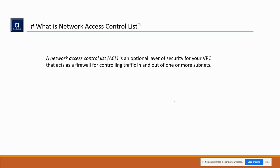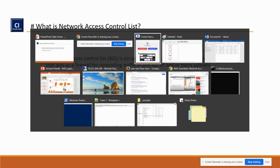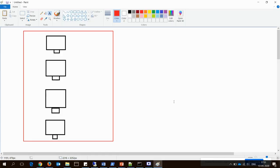NACL is one optional layer of security for your VPC that acts as a firewall. It controls inbound and outbound traffic and it can apply at a time to one subnet or more than one subnet. NACL operates at the subnet level. I have one picture I'll show for more clarity.